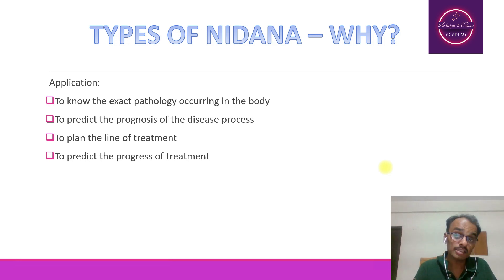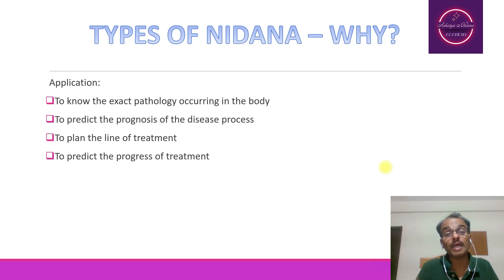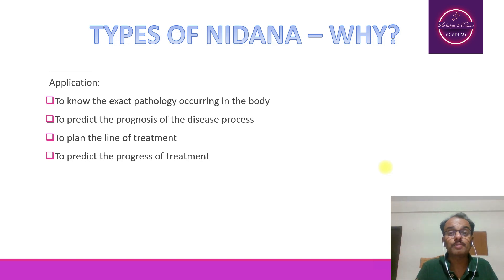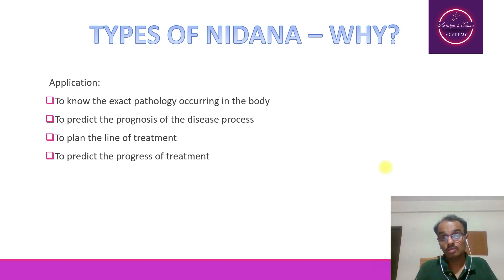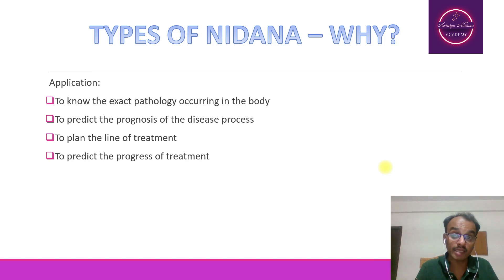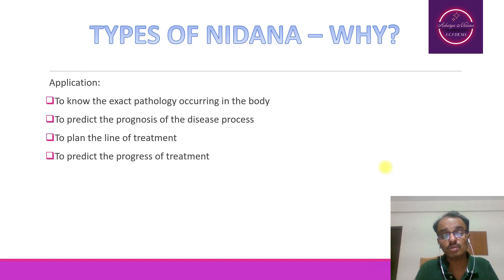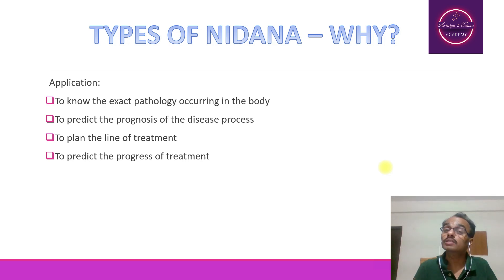From each and every corner, if you know about the concepts of Roga Nidana, the Sadhya Asadhya of the disease process can be identified. Then, to plan the line of treatment — which particular type of treatment, whether Samshodhana or Samshamana, or Bahya or Abhyantara Chikitsa, etc., that can be planned and identified. To predict the progress of the treatment — how far the person is able to respond to the treatment can be identified.